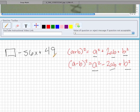So applying that to our problem here, we know that this is a squared, this is b squared, and this term in the middle is 2ab.